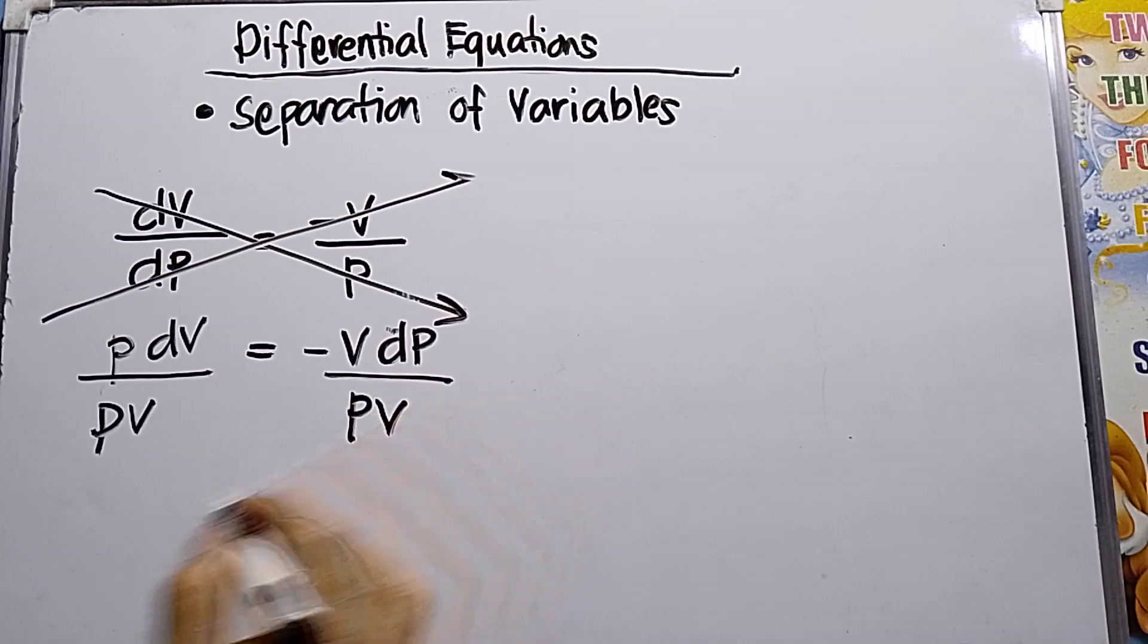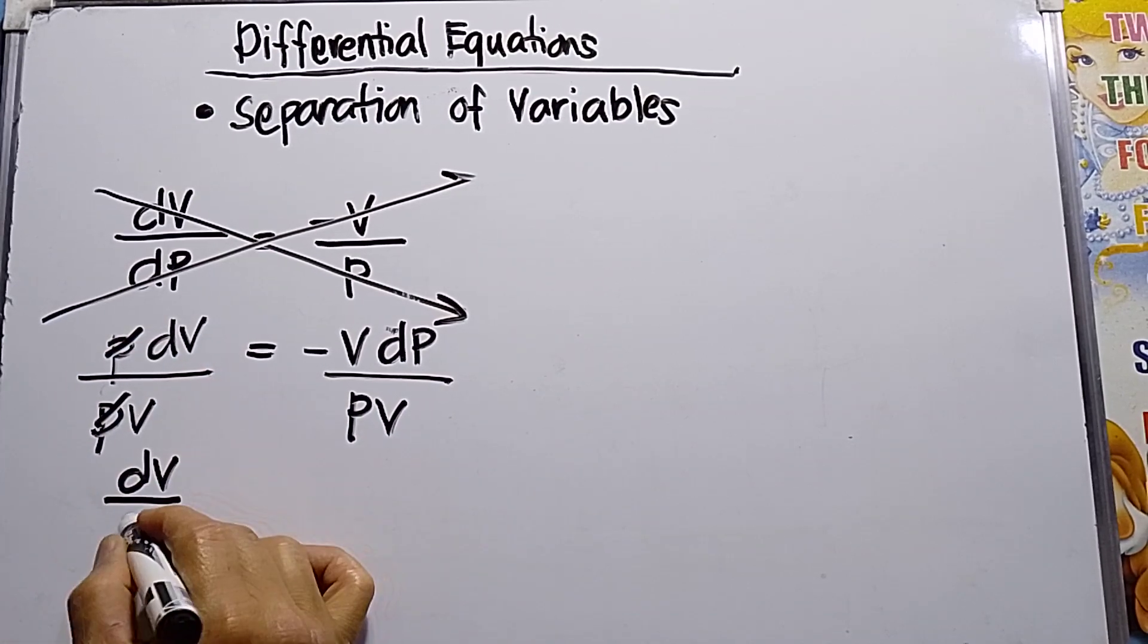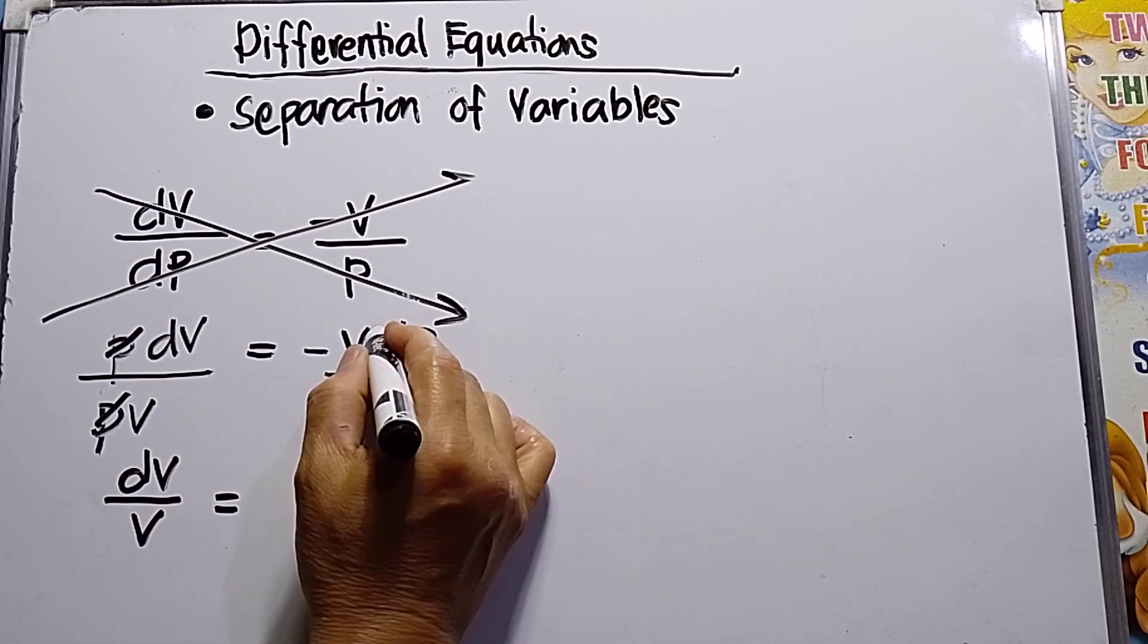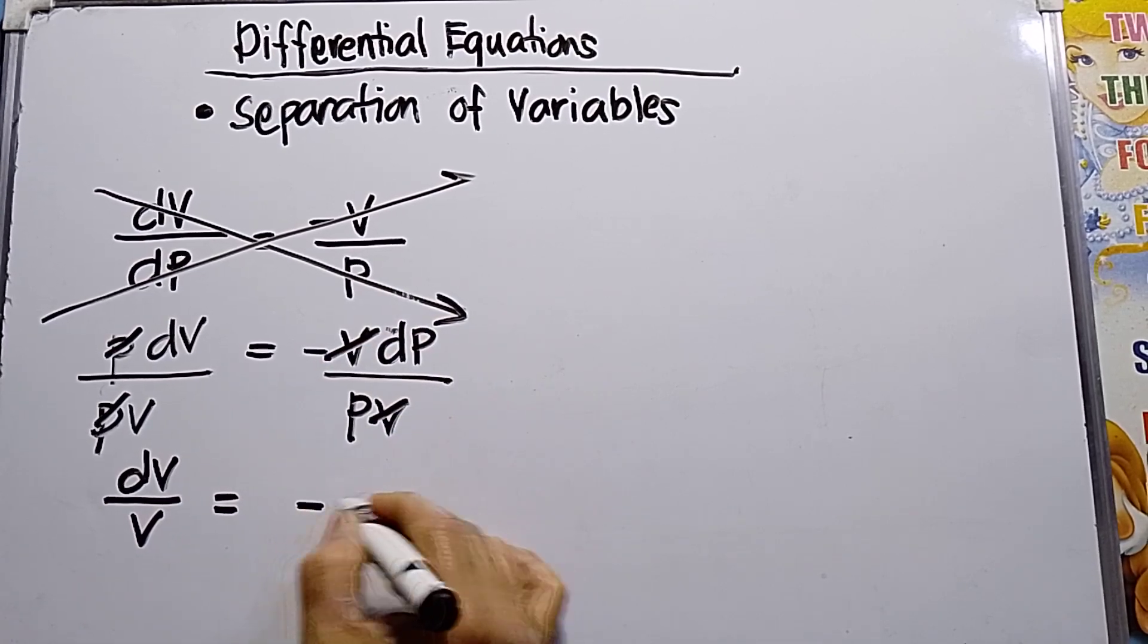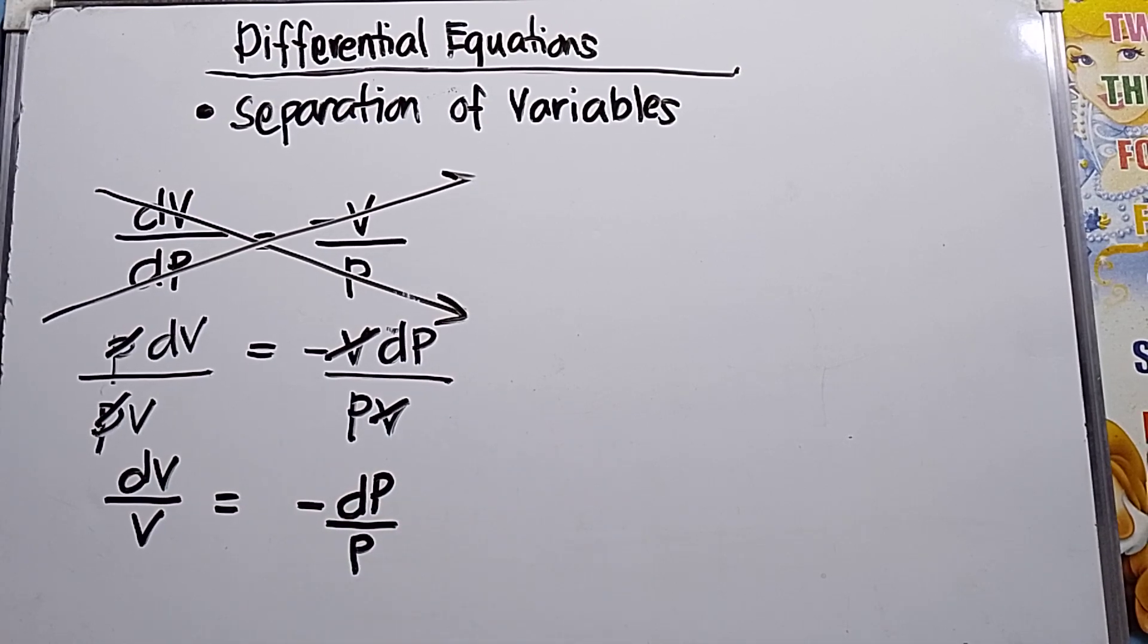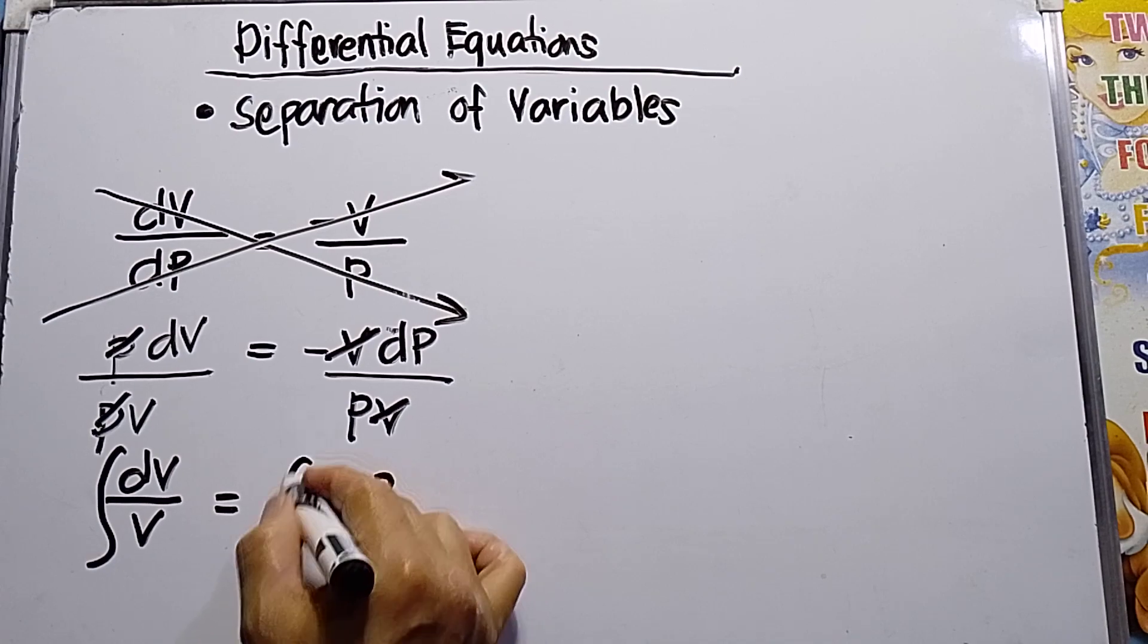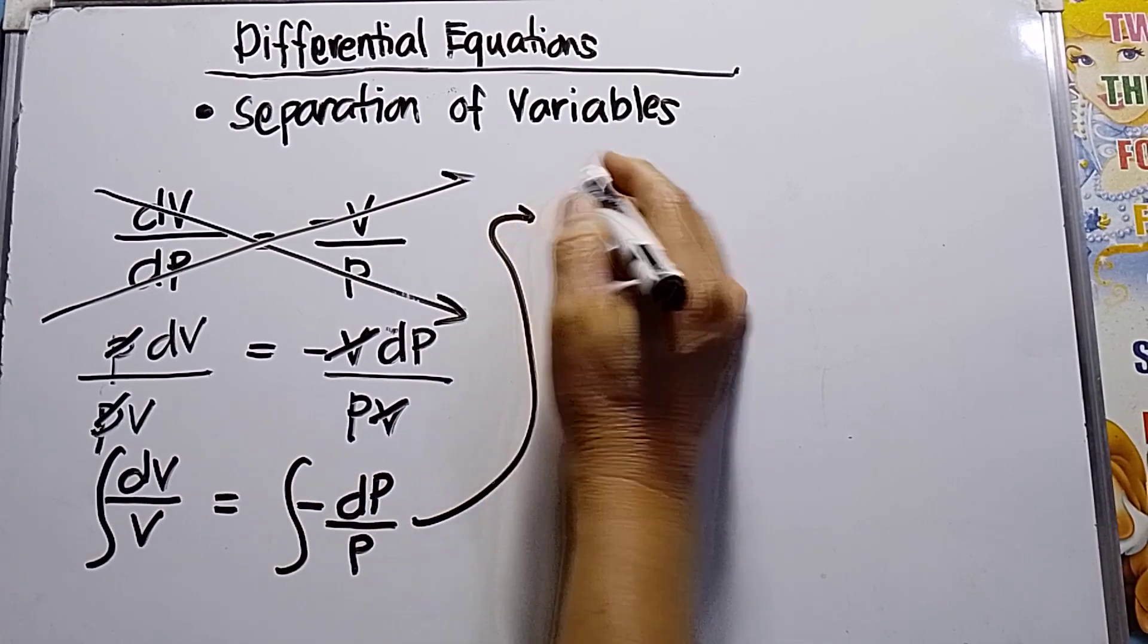P and V will be crossed out, so you have dV over V is equal to negative dP over P. So I can integrate both sides.